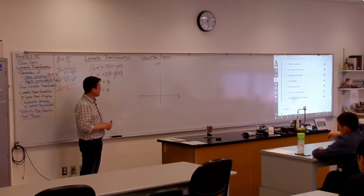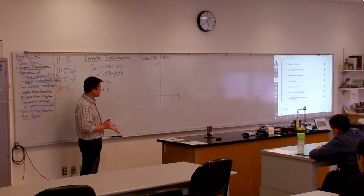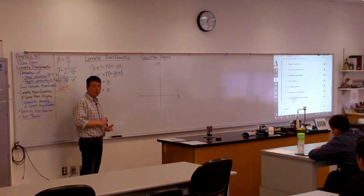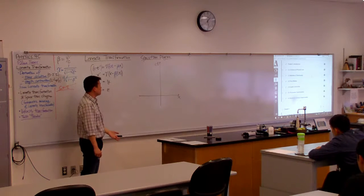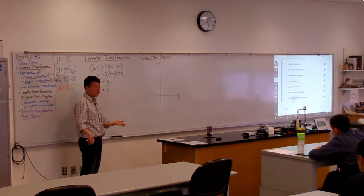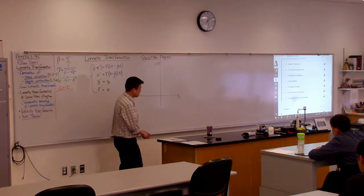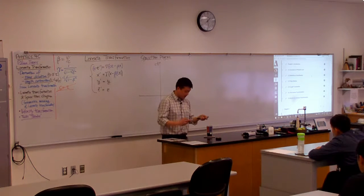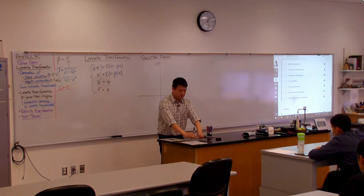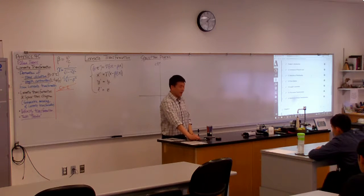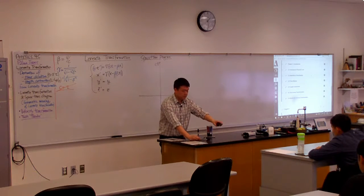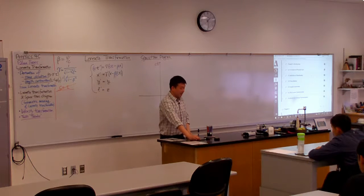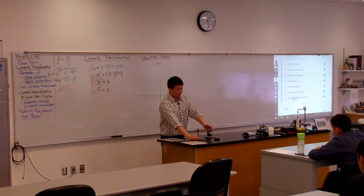So in this space-time diagram, you can represent what are called world lines or trajectories of things in your world. So, for example, with the axis that I was defining earlier, the S frame, when this object is here, I can draw the trajectory of this object.